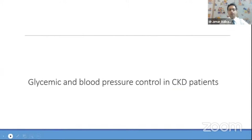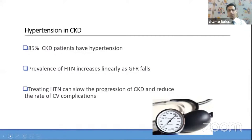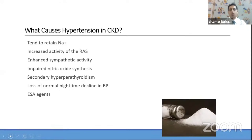Diabetes is the number one cause. A summary of trials suggests that diabetes control helps retard the progression of CKD. We need to optimize anti-diabetic medications to control diabetes. Regarding hypertension and CKD: approximately 85% of CKD patients have hypertension. Hypertension prevalence increases linearly as GFR falls. If we control hypertension, we can slow the progression of CKD.